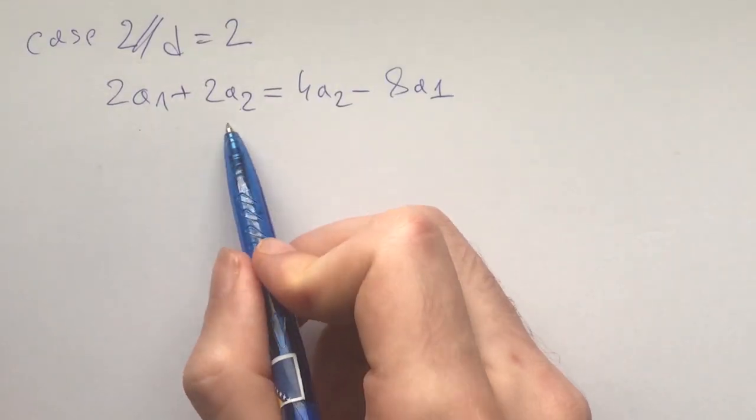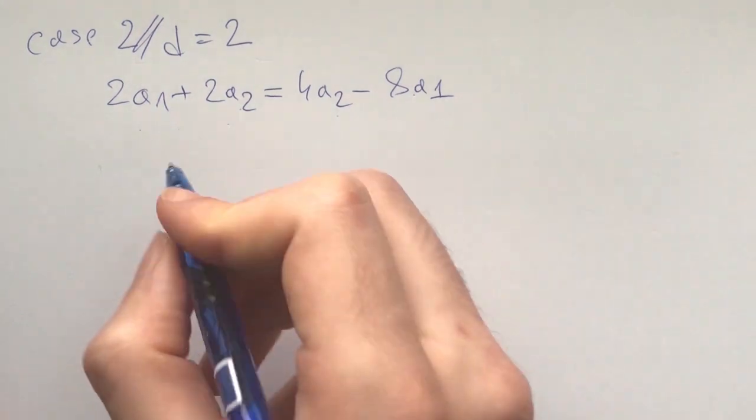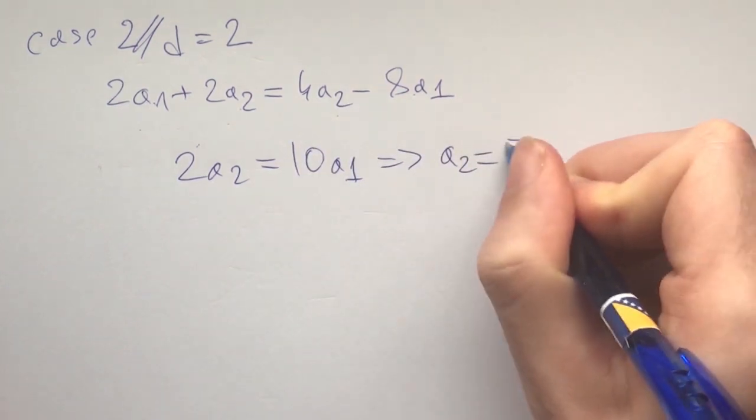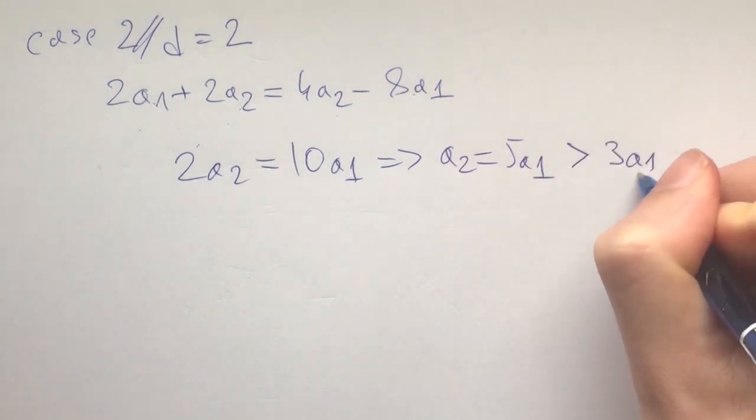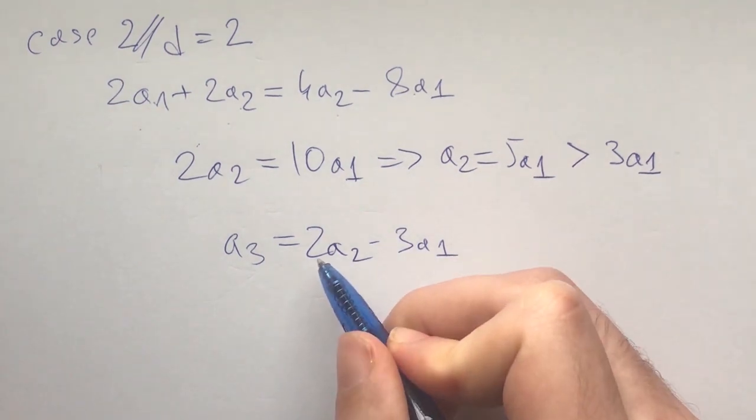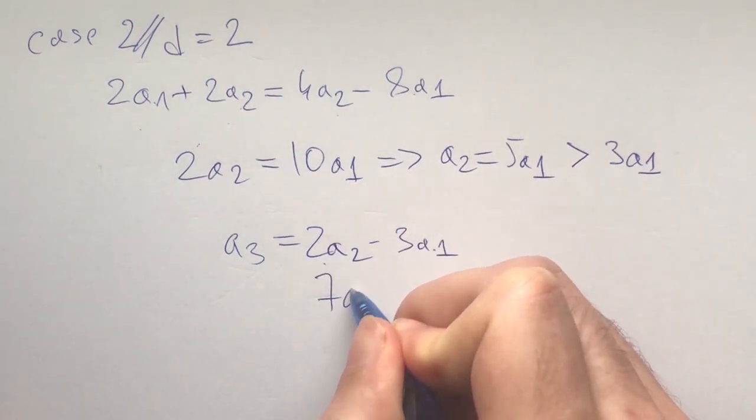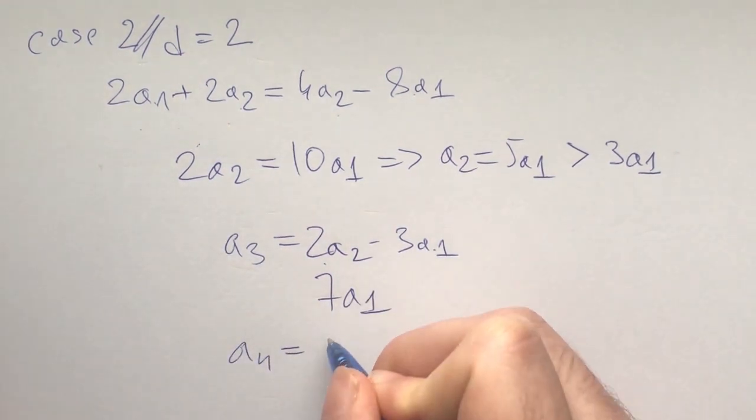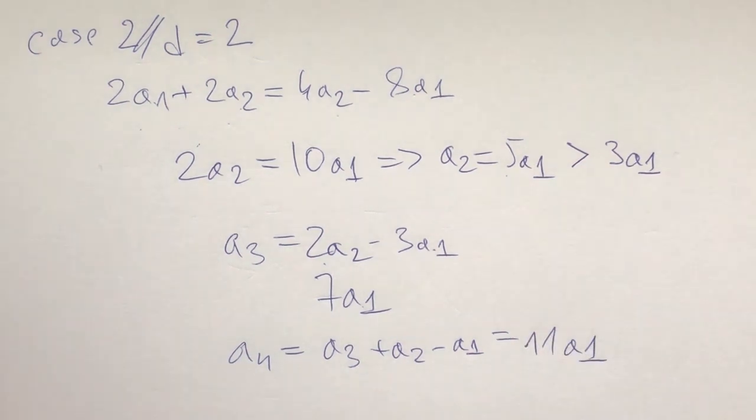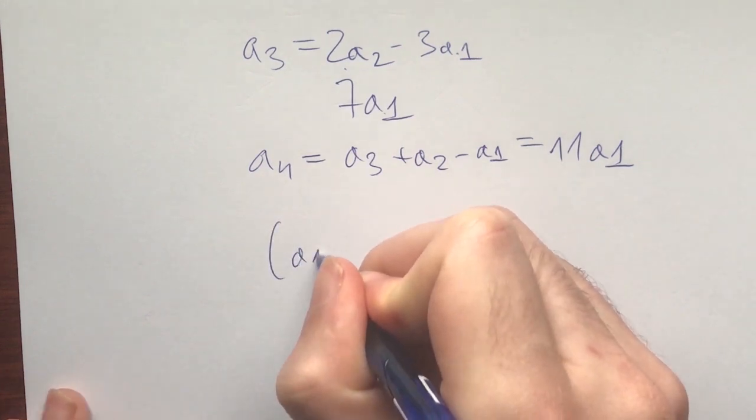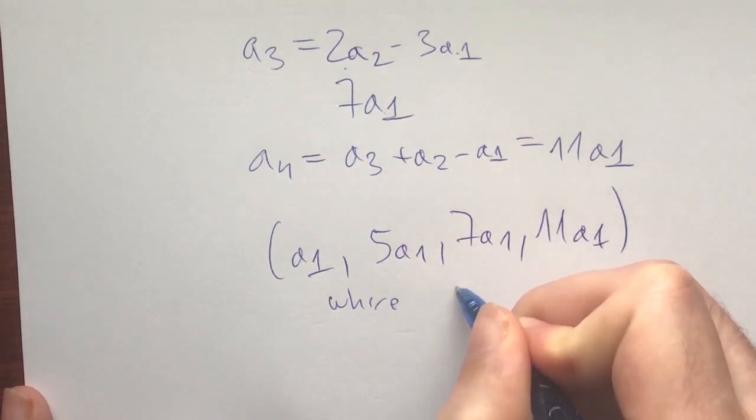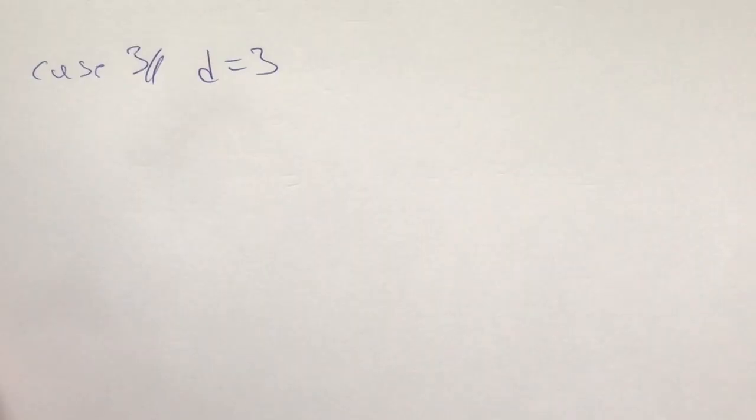Let's get to the next case. Case 2: d equals 2. The condition rewrites as 2a1 + 2a2 = 4a2 - 8a1. Doing a little bit of algebra, this gives us 2a2 = 10a1, in other words a2 = 5a1, which is greater than 3a1, so we're in the clear. Now what is a3? We know a3 = 2a2 - 3a1, which here is 5a1 - 3a1 = 7a1. And finally a4 = a3 + a2 - a1, which is 7 + 5 - 1 = 11a1. This gives us a family of solutions, namely a1, 5a1, 7a1, and 11a1, where a1 is a positive integer.